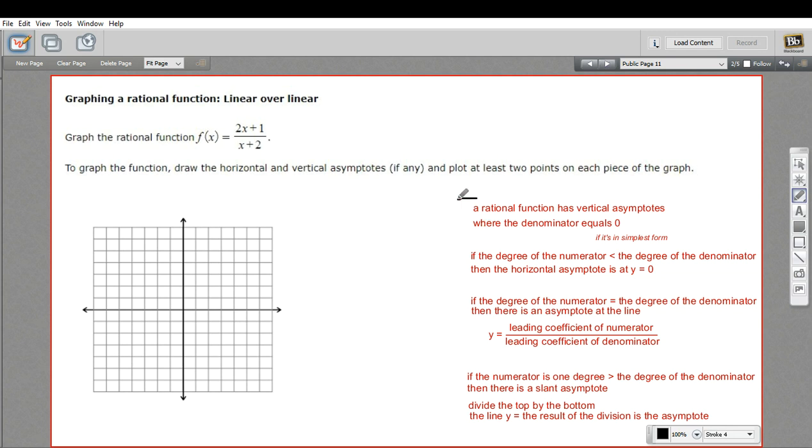The vertical asymptote, of course, is where the function has 0 in the denominator. So in this case, that would be negative 2. This appears to be in simplest form. I don't think there's anything I can factor and cancel out. So x equals negative 2 would turn this denominator into 0. So that is the line that is our asymptote. We'll just put a big red line at x equals negative 2. So there's one asymptote.